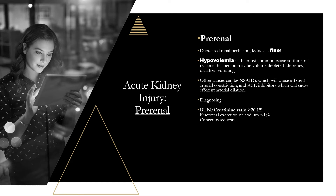For diagnosing pre-renal AKI, the BUN-to-creatinine ratio is over 20:1 — that's really important. Also look for fractional excretion of sodium less than 1%. The urine is going to be concentrated, not dilute, because the person is volume depleted.